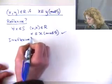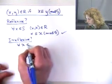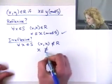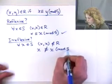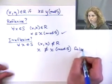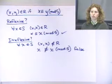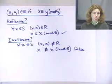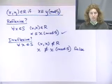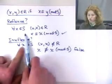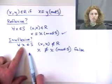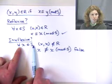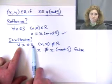Is it irreflexive? Writing the definition again: xx is not in R, so that means x is not congruent to x mod 5. That's false. You don't normally have reflexive and irreflexive at the same time, although it doesn't hurt to check. The only time you can have both is if there are no points in the set — if S is empty, then any statement is vacuously true.